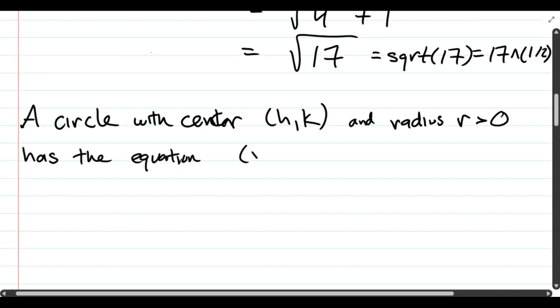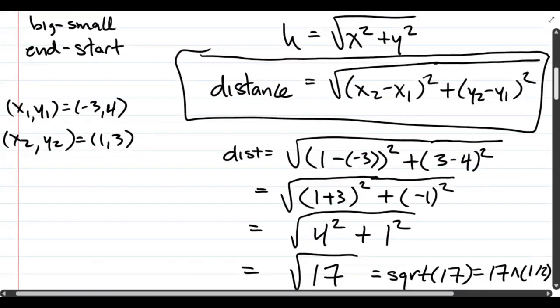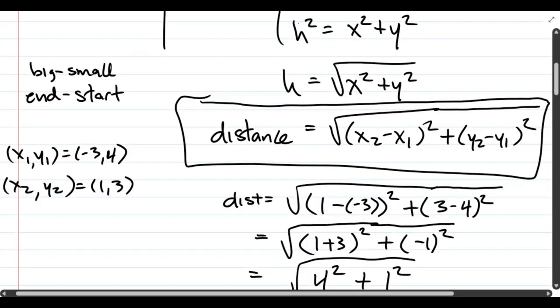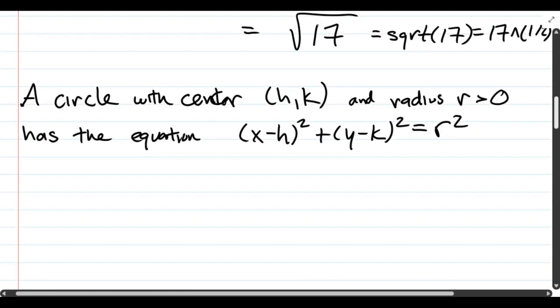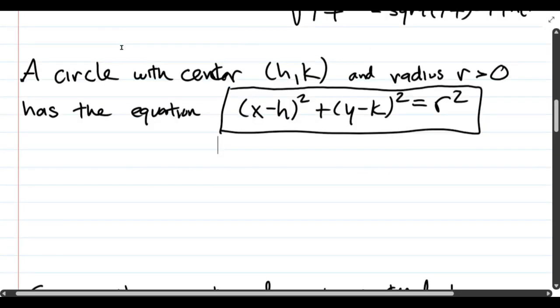So a circle with center HK and radius R has the equation. It's X minus H squared plus Y minus K squared equals R squared. And this is basically the distance formula. One step above or if you just take the square root and square both sides. That's the formula you're looking at. Okay, so that's our circle equation. This is really important. So again, the important things I'm putting inside of a box. We had our distance formula in a box earlier. Now we have our circle formula in a box. And we're ready to use this on the next problem.